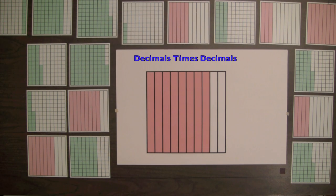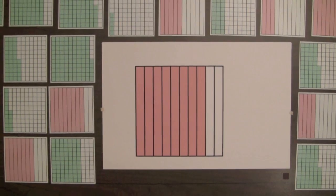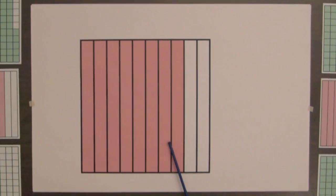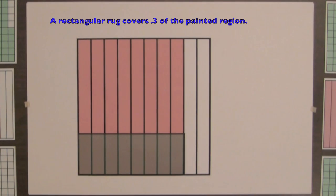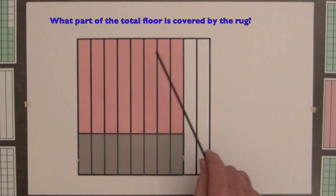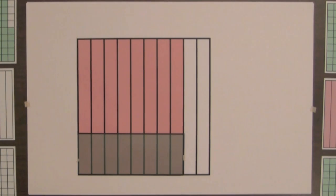Let's look at another example of the product of two decimals. This square represents 8 tenths of a floor that has been painted. And a rectangular rug is placed over 3 tenths of the painted region. What part of the total floor is covered by the rug? So we need to find 3 tenths of 8 tenths, that is, 3 tenths times 8 tenths.